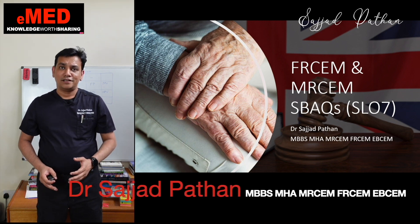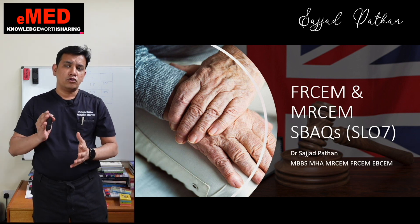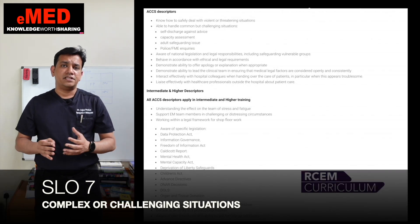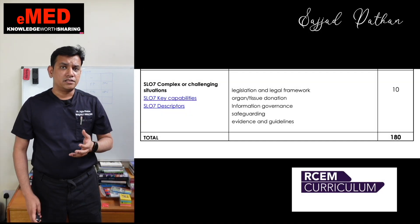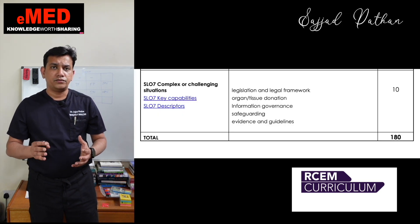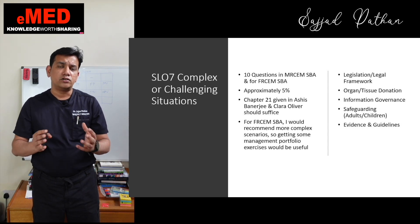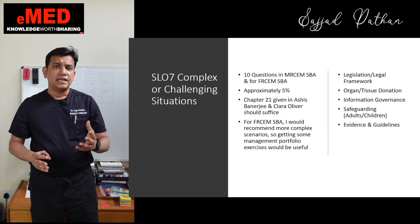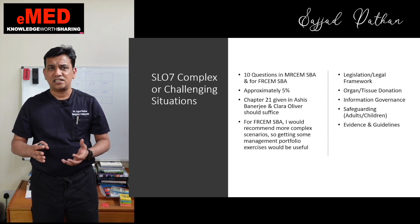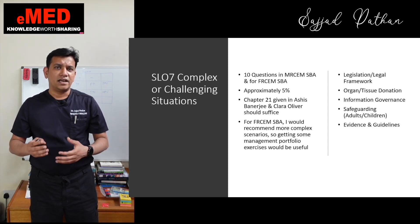Hello guys, I'm Dr. Sajad Pathan and I welcome you once again to an episode where we are going to look at five single best answers for the MRCEM or FRCEM SBA exams. Here I'm going to touch on SLO7, the Specialty Learning Outcome 7, where there are 10 questions which will be asked. Looking at the regulations guidance given by the college, it is clear that they will be asking 10 questions out of 180 from SLO7, which is the legal framework of practice dealing with complex challenging situations where you are tested for legal procedures, organ donation and other sensitive issues.